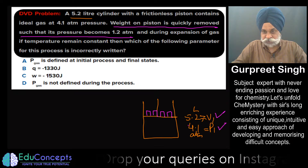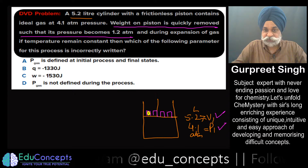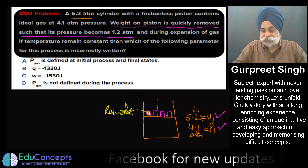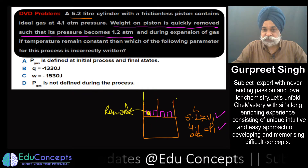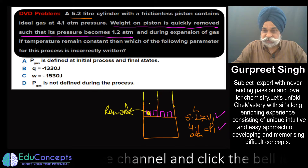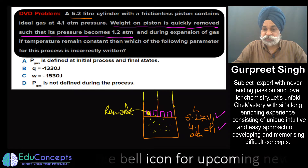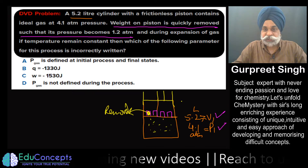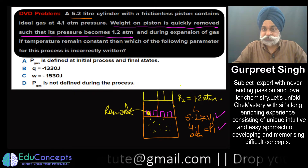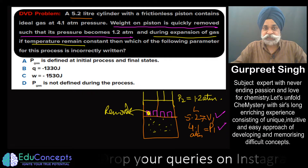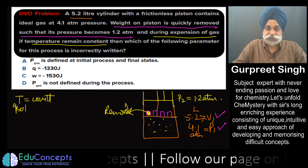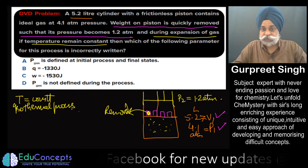There must be some weights placed on the piston at the initial condition when pressure is 4.1 atm and volume is 5.2 liters. The fellow has removed those weights. It is always advisable to make a little diagram or tabulation to understand what exactly you have to do. As soon as the weight is removed, the tendency of the gas or piston is to move upward, attaining a final pressure of 1.2 atm. During the expansion, the temperature of the gas remains constant — this is an isothermal process.